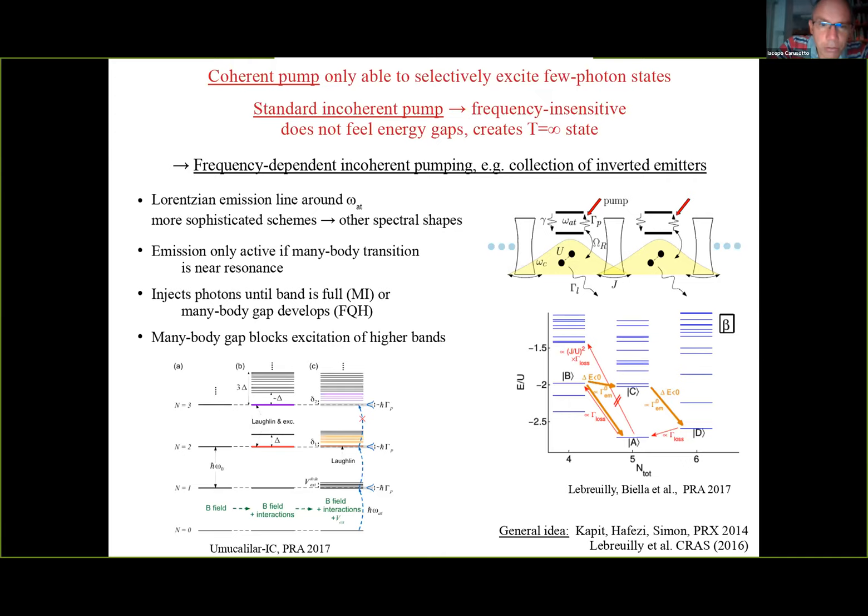The problem is that the scheme of coherent pump scales very badly with the number of photons. One is able to generate a two-photon Laughlin state, but this scheme could hardly get to an eight-photon Laughlin state. Not even eight - already with that number of photons some problems could appear. Something more clever needs being done.